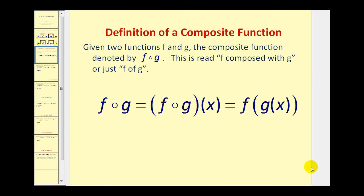The formal definition of a composite function states: given two functions F and G, the composite function denoted using this notation is F composed with G, or just F of G. We need to be careful not to confuse this symbol here with a multiplication sign. Notice for a composition of functions, it's a hollow circle, whereas for multiplication, it would be solid.